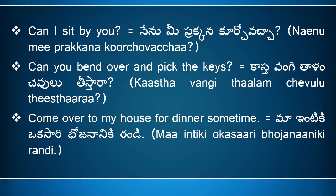'Come over to my house for dinner sometime' means 'maa intiki, okasari, bhojan aniki randi.' 'Come over' means 'randi,' 'to my house' means 'maa intiki' — actually 'house' means 'illu,' but 'to my house' means 'maa intiki.' 'For dinner' means 'bhojan aniki.' 'Sometime' means 'koanthasepu' or 'koanthasamayam,' but in this sentence we can say 'okasari,' which means 'one time.'